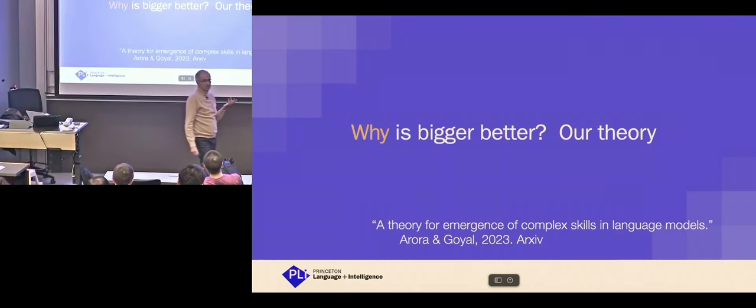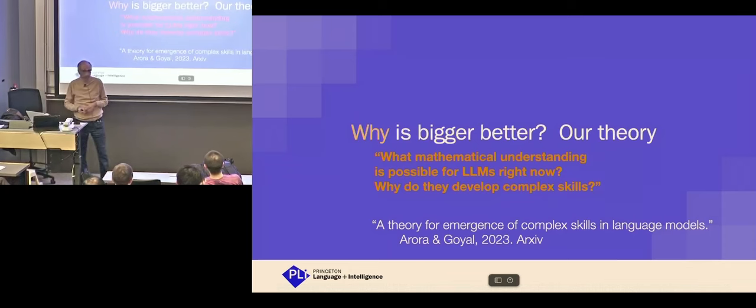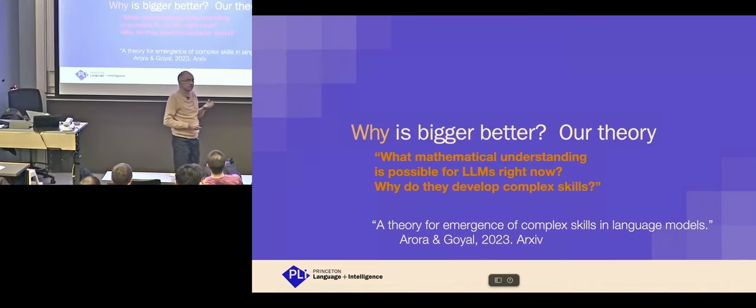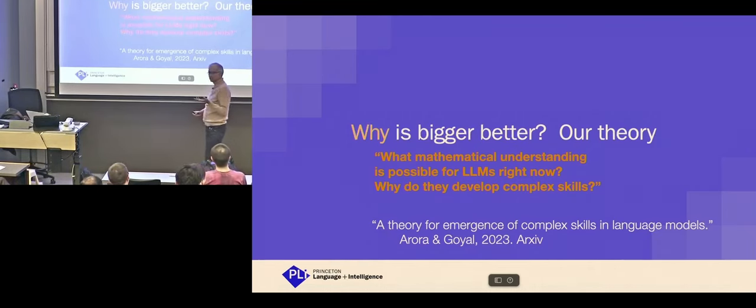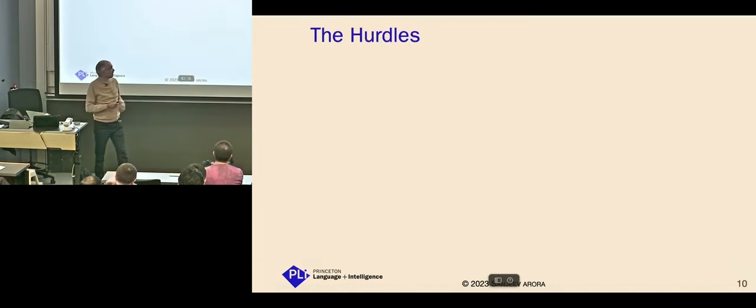So, why is bigger better? That's the theory we're trying to create. Okay. And that's this paper with Anirudh Goyal of DeepMind. And this was done at DeepMind when I was on sabbatical there. Theory for emergence of complex skills. So, the point of view here is, deep learning, language models, these are very hard to understand. What can we, what kind of conceptual understanding can we derive now? That can be somewhat rigorous. And it should make some kind of predictions that should stand up.